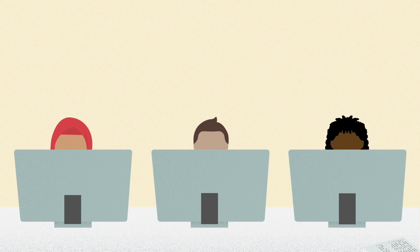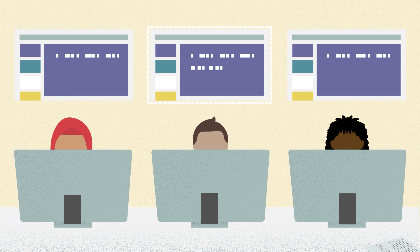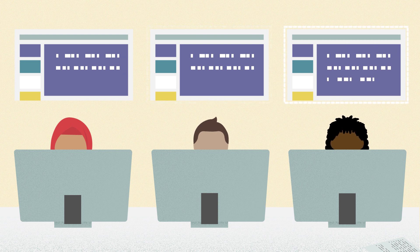In this video, each group member will add a text box that describes a choice the reader can make. You'll then link that text box to a new slide. For this part of the activity, each group member will work at their own computer, but you'll work in the presentation at the same time.